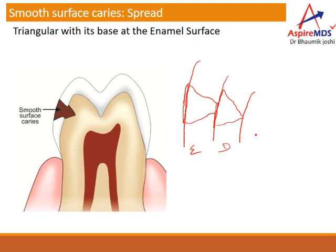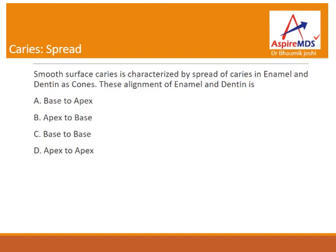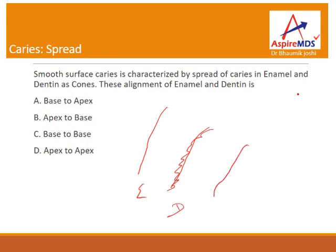Based on this, there are exam questions. The first one: in smooth surface caries, which is characterized by spread of caries in enamel and dentine as cones — how does the caries spread? Base to apex, apex to base, base to base, or apex to apex? In smooth surface caries it starts as a wider area, then reaches the DEJ as the apex of a triangle, then spreads again at the DEJ, and then the triangle apex goes towards the pulp. So aligning enamel and dentine, this relation is called apex to base — that is the answer.